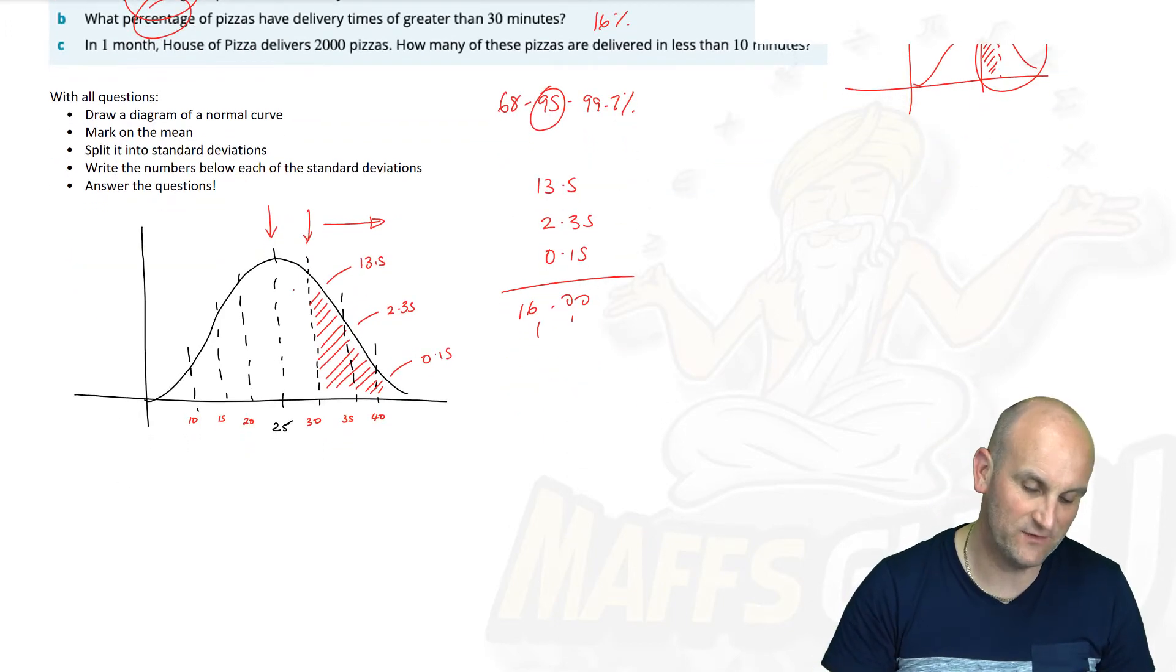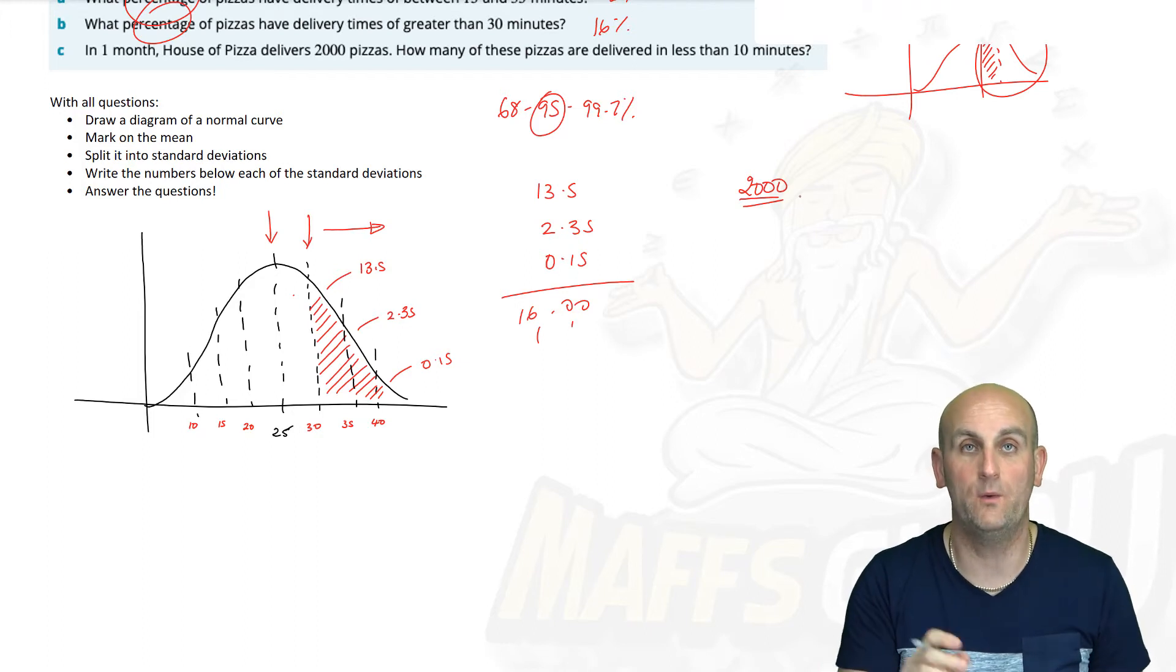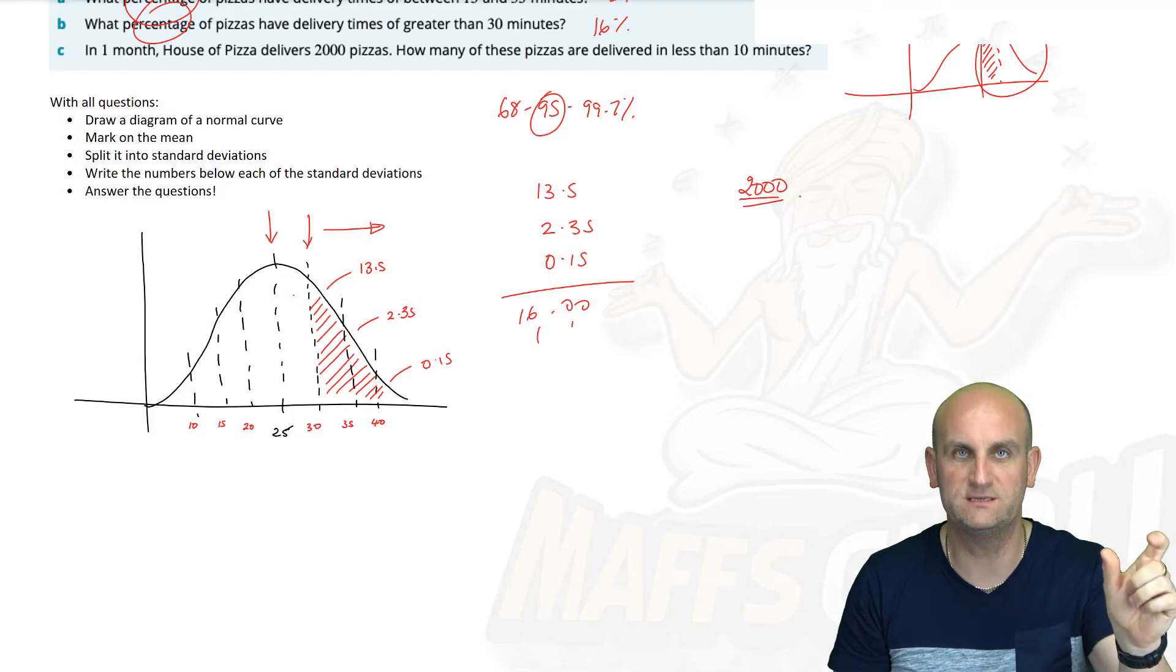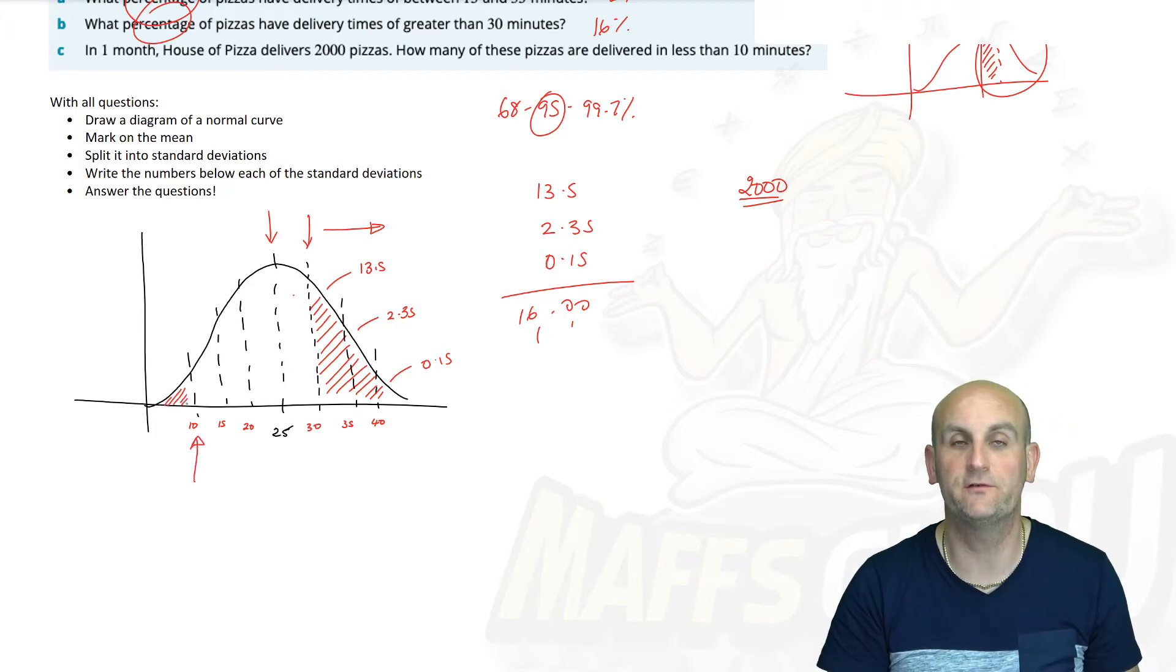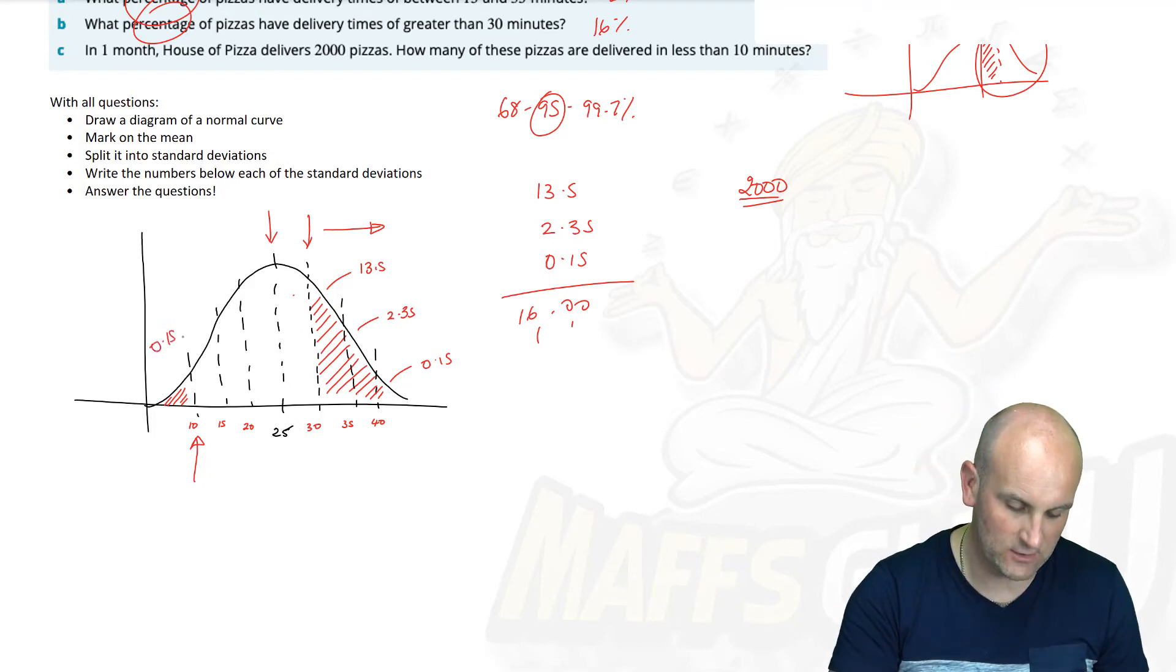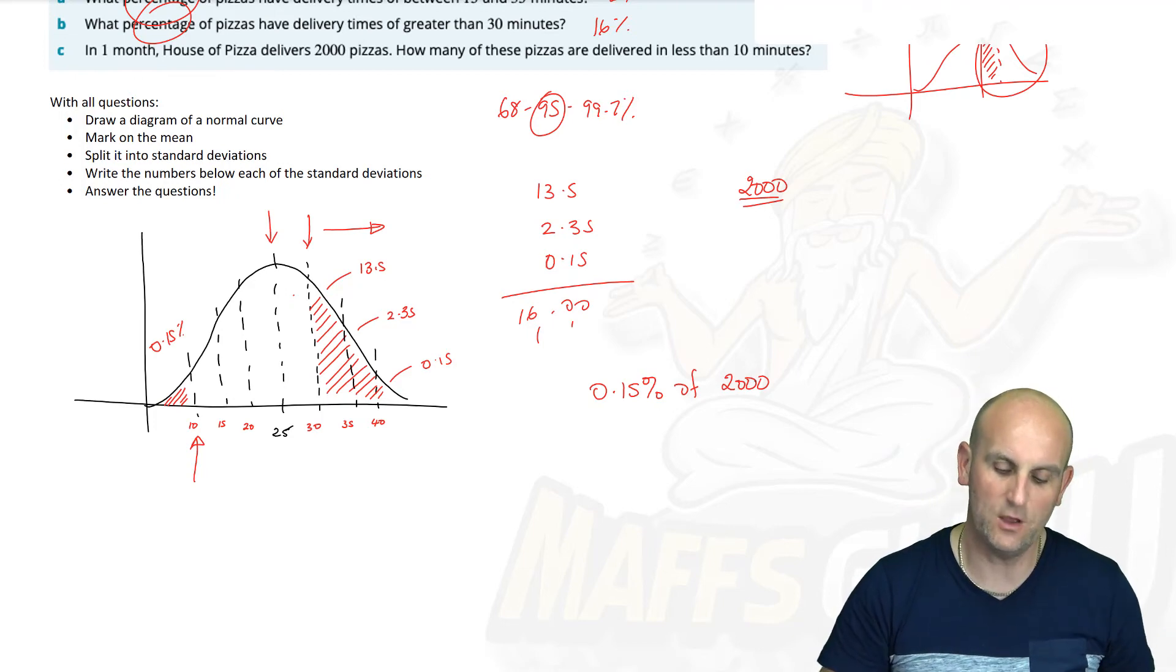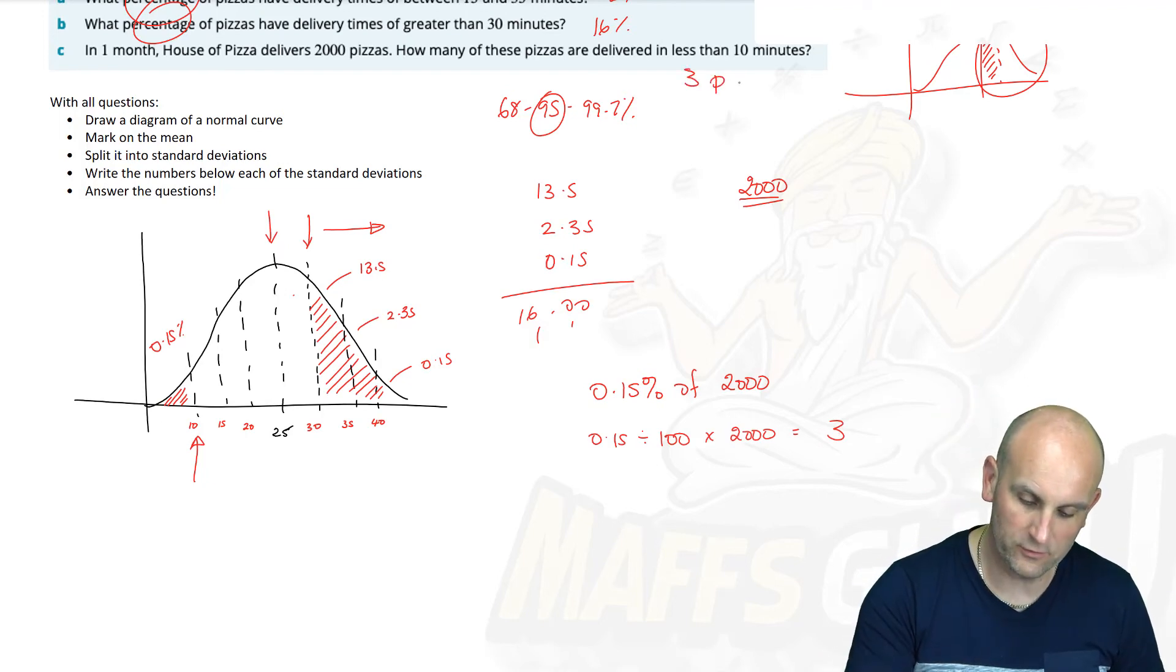In one month, House of Pizza deliver 2000 pizzas. How many of these pizzas were delivered in less than 10 minutes? There is my 10 minutes. Here is my section that's less than 10 minutes. I know my percentage is 0.15%. So work out 0.15% of 2000. Percent sign becomes divided by 100. On my calculator, I do 0.15 divided by 100 times by 2000, which gives me three. The answer therefore would be three pizzas.